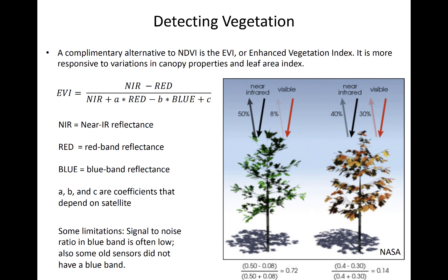Many other indices exist for estimating vegetation robustness. An alternative to the NDVI is the Enhanced Vegetation Index, or EVI, which incorporates multiple visible bands and is more sensitive to vegetative properties such as leaf area index.